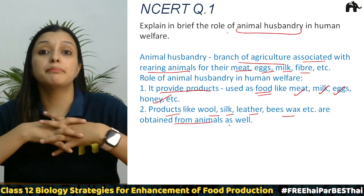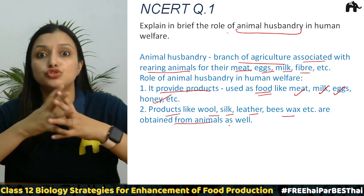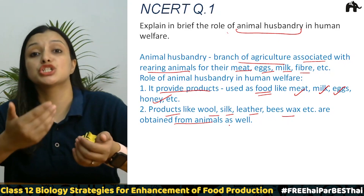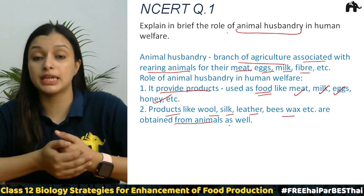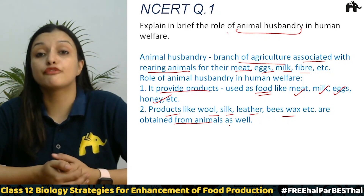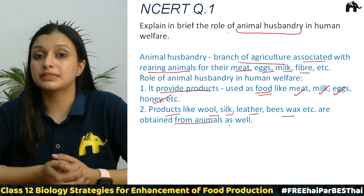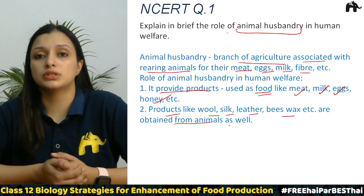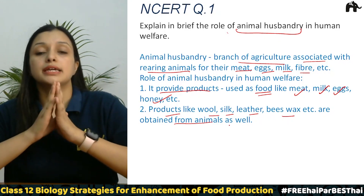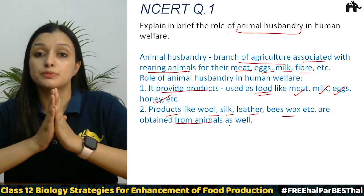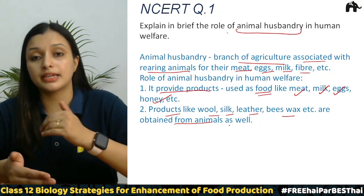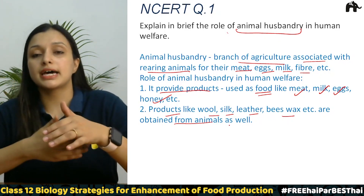It also provides products like wool, silk, leather, and beeswax which are obtained from animals. Wool we get from sheep, silk from silkworms, and leather from animal skin. Animals are very important because if we don't take care of them, we will not get all these things.